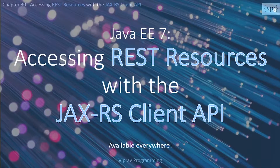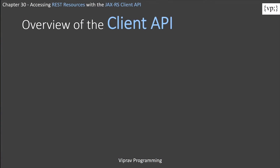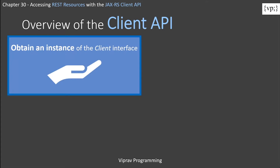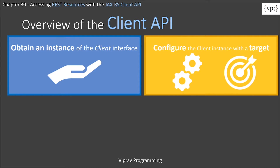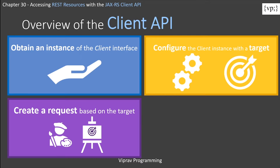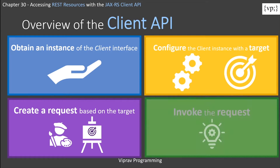JAX-RS provides a client API to allow access to REST resources from other Java applications. Taking an overview of the client API, the following steps are needed to access a REST resource: first, you need to obtain an instance of the client interface; then, you have to configure the client instance with the target; then, you have to create a request based on the target; and finally, invoke the request.